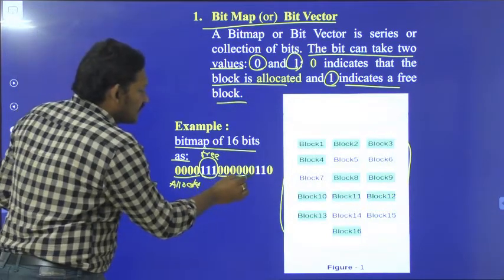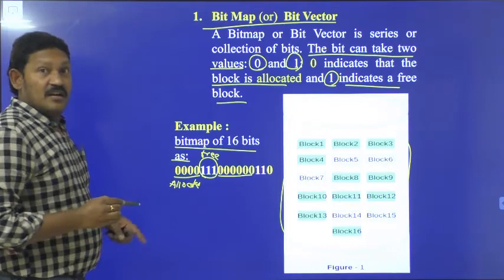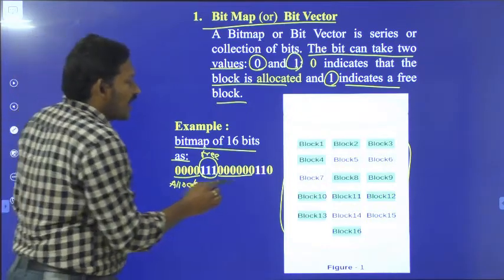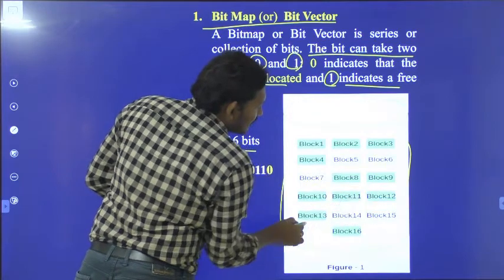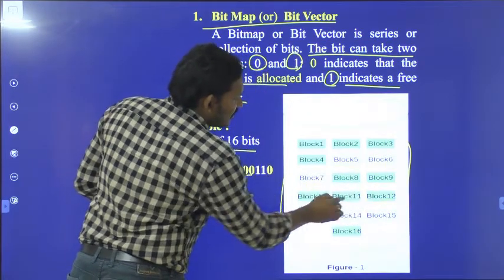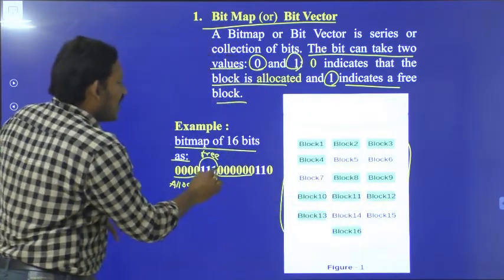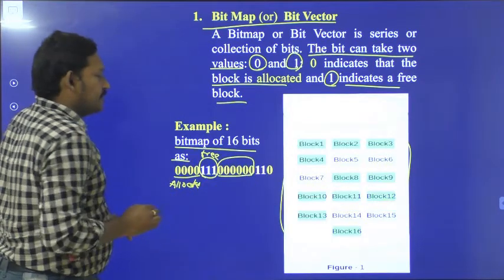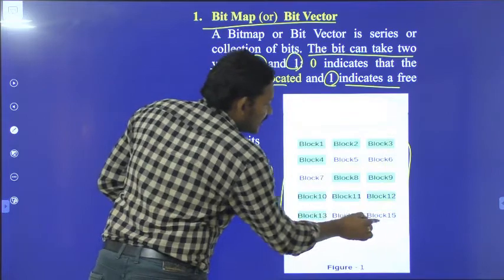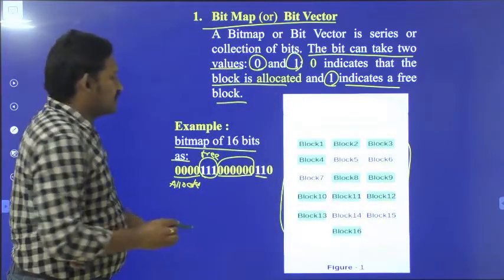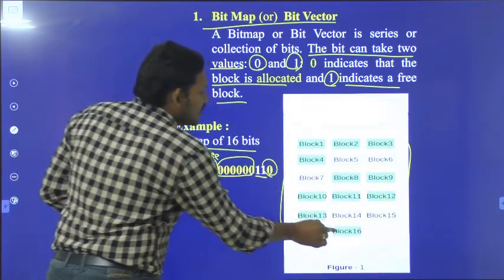Again, the remaining 6 bits are filled, they are already allocated. See: 8, 9, 10, 11, 12, 13—6 bits are allocated. Next, we have 2 free blocks: 14, 15. Free blocks. Again, block 16 is allocated.